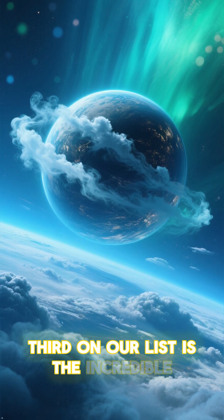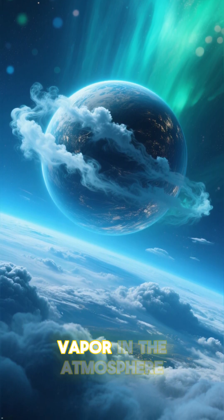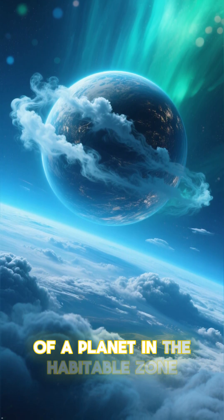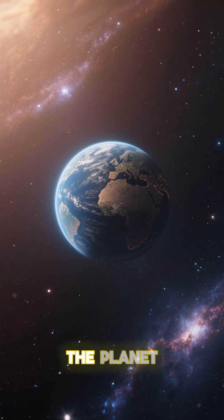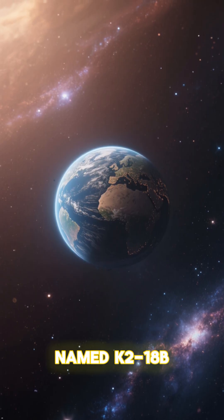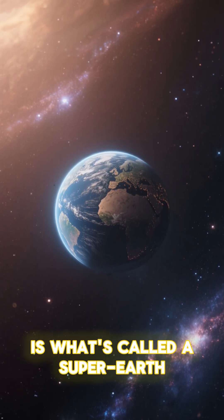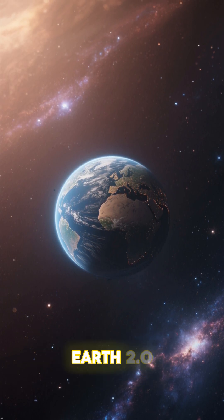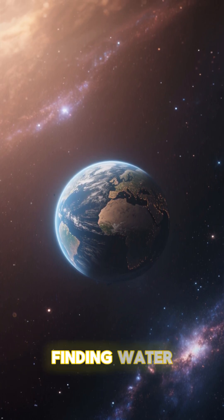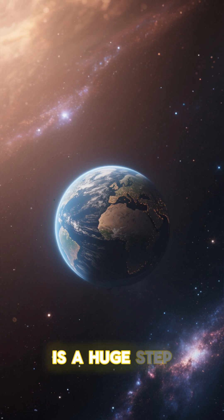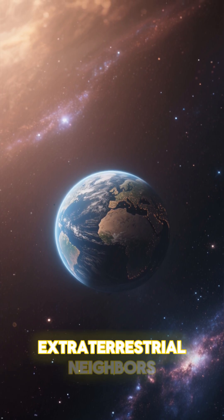Third on our list is the incredible discovery of water vapor in the atmosphere of a planet in the habitable zone. The planet, named K218b, is what's called a Super Earth. And while it's not exactly Earth 2.0, finding water where life could exist is a huge step forward in our search for extraterrestrial neighbors.